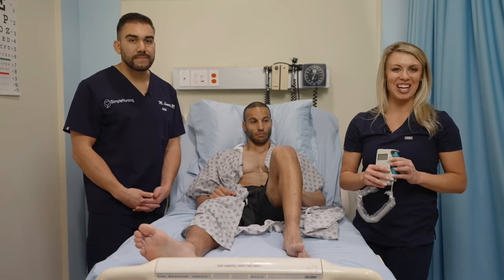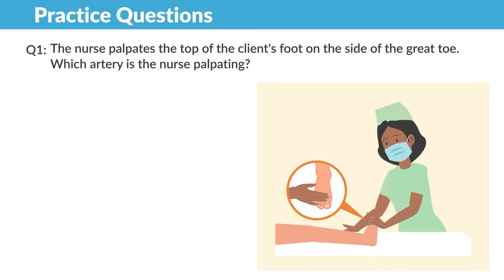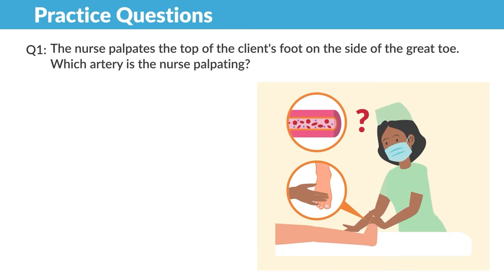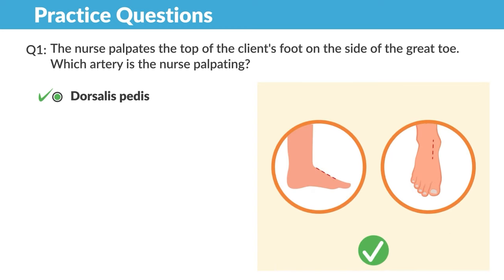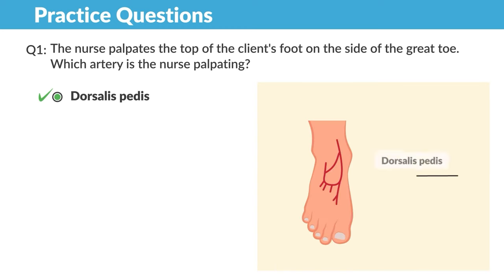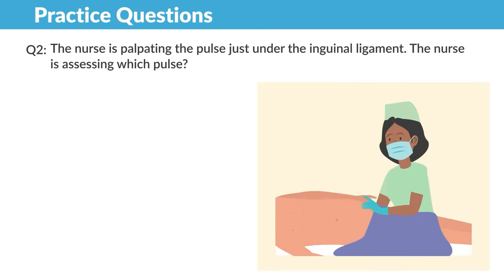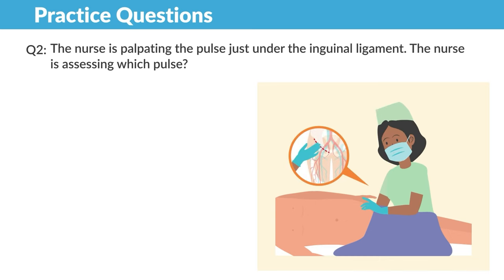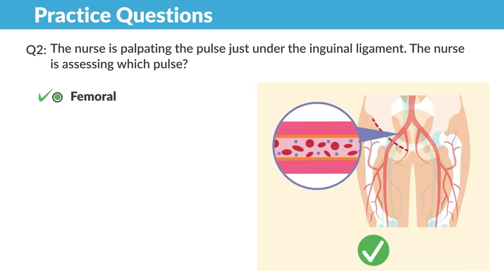Now for some practice questions. Question one: The nurse palpates the top of the client's foot on the side of the great toe. Which artery is the nurse palpating? Dorsalis pedis — dorsal means the top, pedis like a pedicure, the top of the foot. Question two: The nurse is palpating the pulse just under the inguinal ligament. The nurse is assessing which pulse? Femoral.